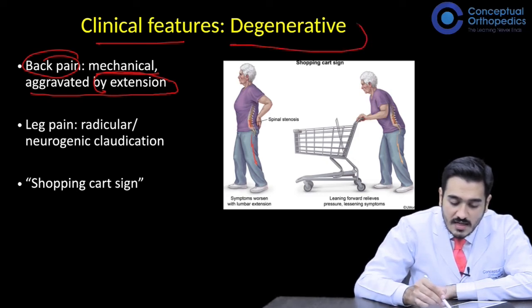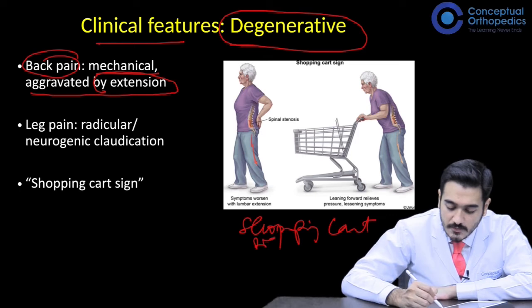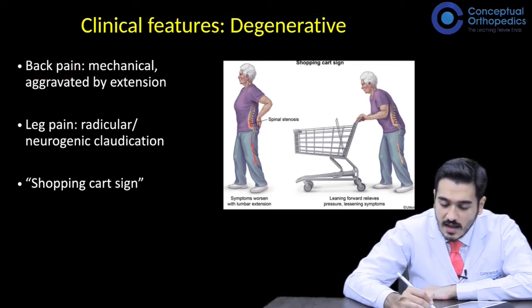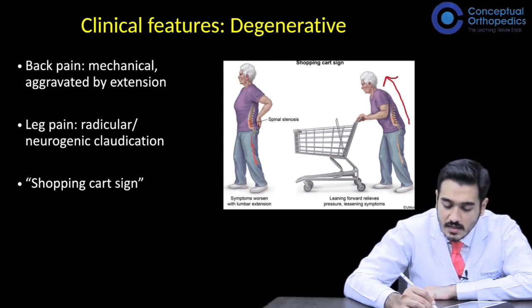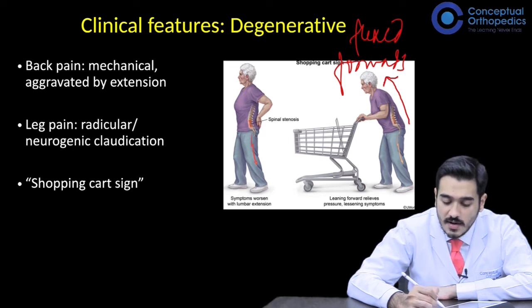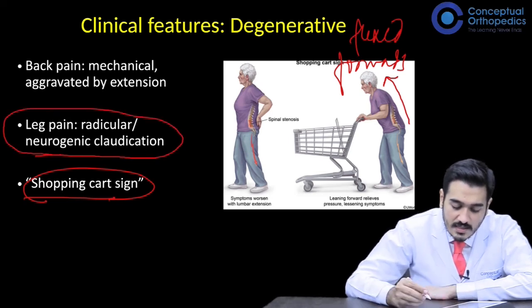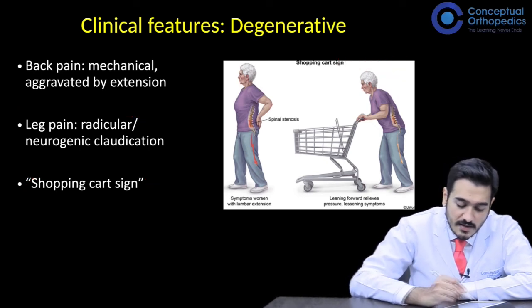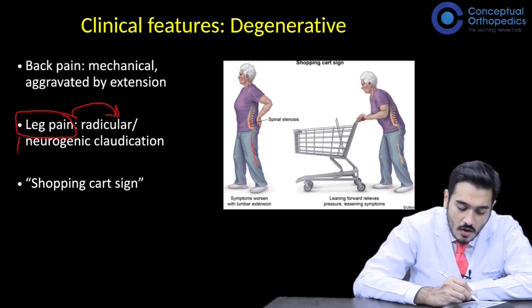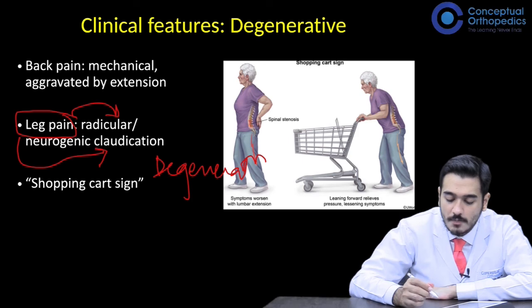There may be degenerative-related symptoms, and the classic sign here is the shopping cart sign. As a compensatory measure to relieve pressure on the nerves at the lateral recess, the patient leans forward. This flexion forward — like bending while pushing a shopping cart — is a classic sign of nerve pain caused by degeneration. This is seen in cases where the nerves are involved, causing neurogenic claudication. The nerve roots being affected produces leg pain that may be radicular or claudication-like, and patients present with the shopping cart sign because leaning forward relieves the pressure and decreases the pain.